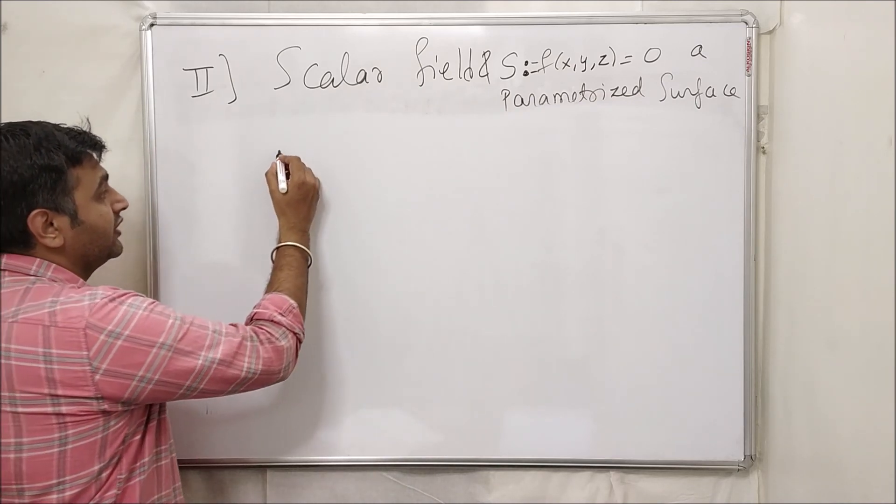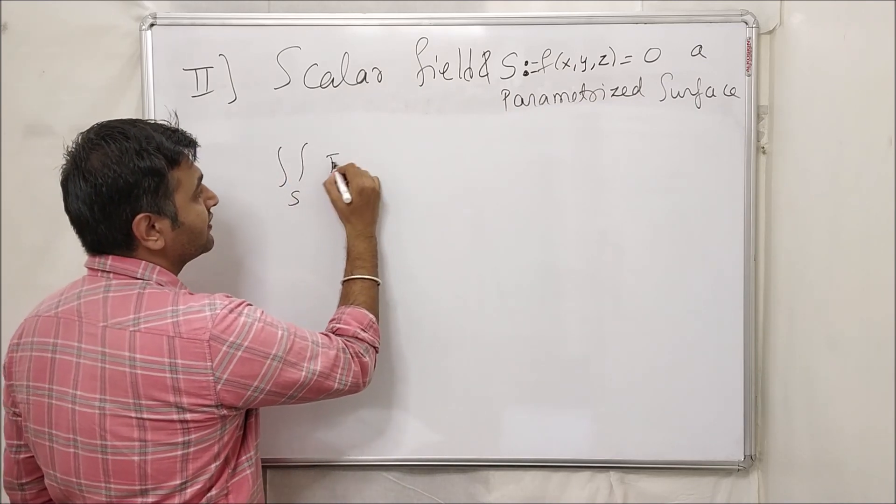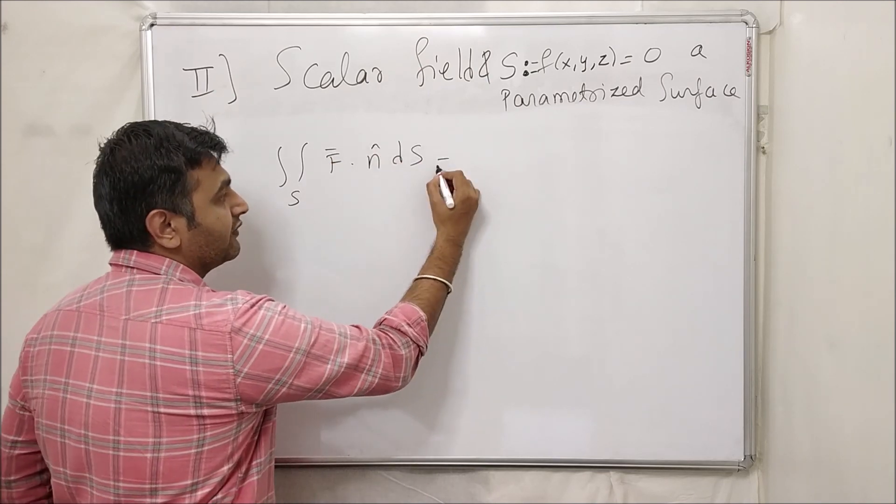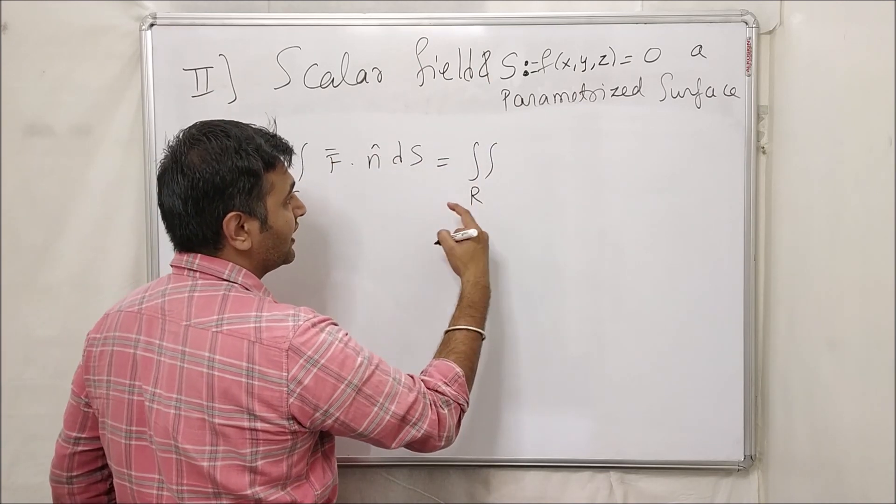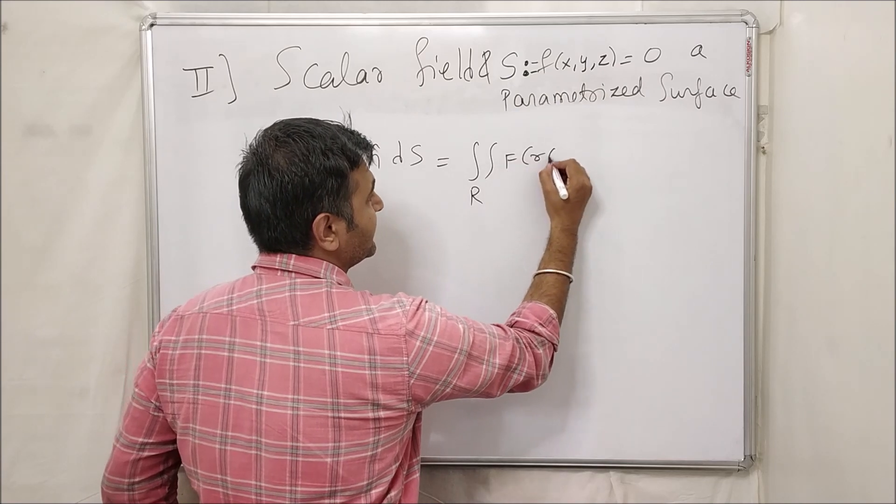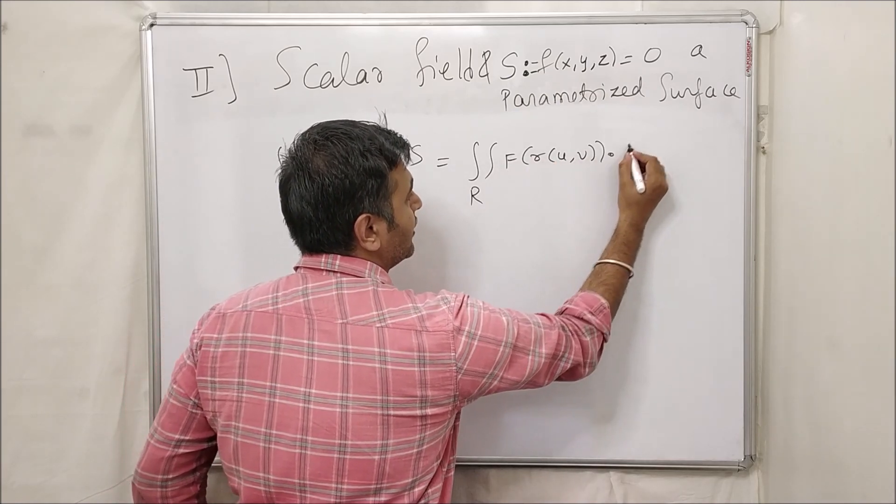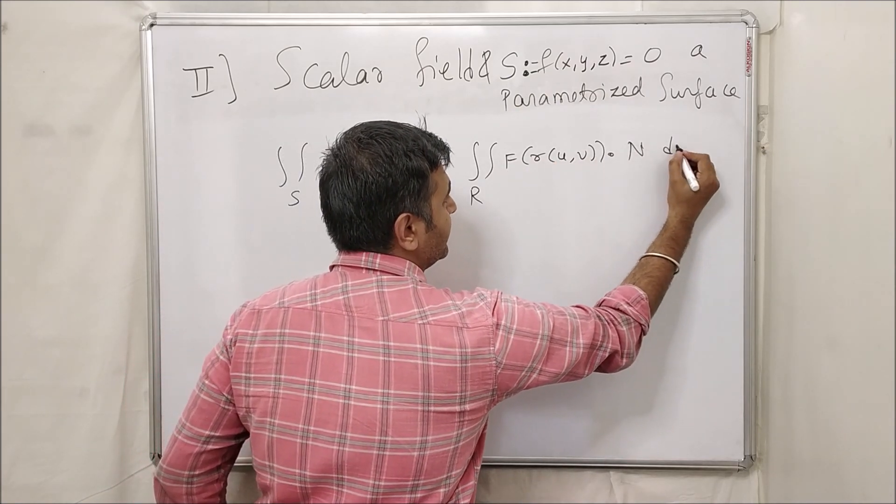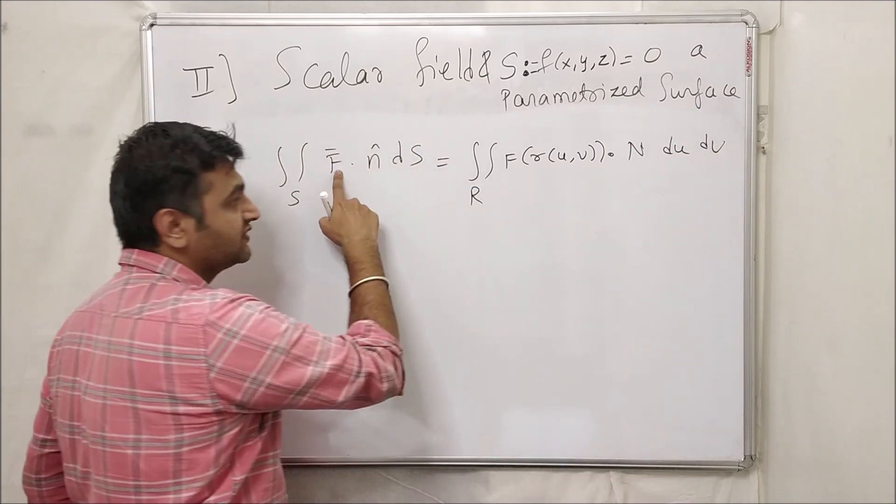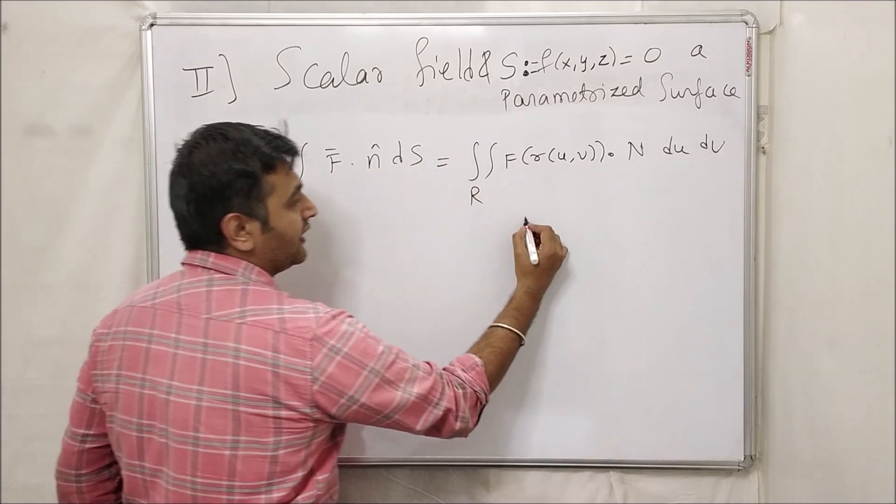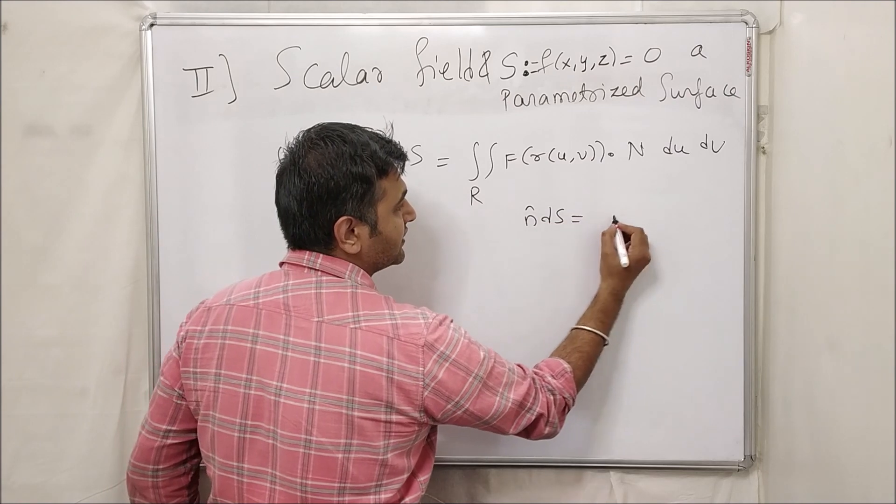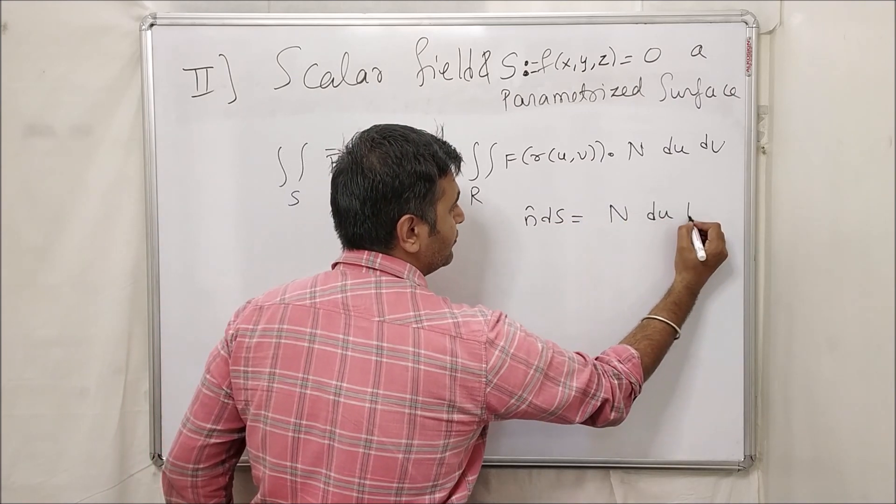If you recall, F was the vector field F dot n the normal vector. How did we define double integration over R? You parameterize the surface. So F of R of uv dot product with n and then du dv. So F is nothing but F of R of uv and your n cap ds was nothing but n du dv.